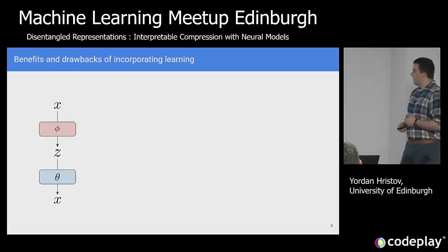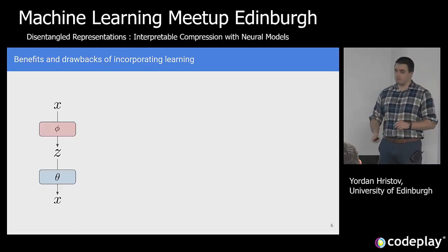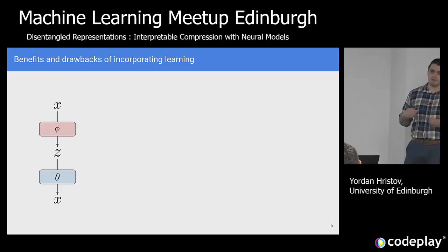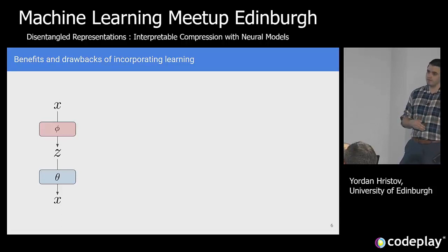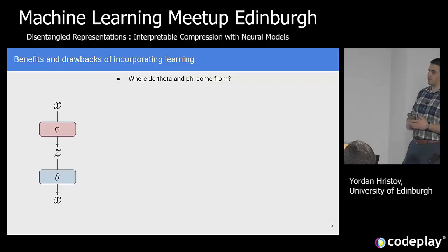If we think about this compression and decompression as modules parameterized by certain parameters: in the previous case, the bar-plotting algorithm could be the blue module, and the red module could be a column-identifying module. You get your image and basically decide which column is active at the time. That's meant to illustrate what I mean by compression — though it's not always clear where these parameters come from. In the easy example it's just a bar-plotting algorithm, but in more complicated scenarios those are not so trivial to derive.